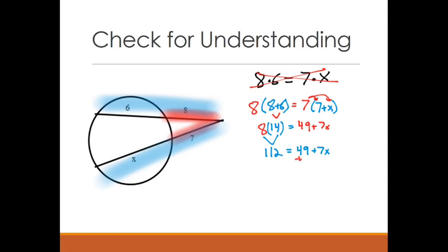And that's equal to 49 plus 7X. Then I'm going to subtract 49 from each side. And we have 63 equals 7X. And then lastly, I'm going to divide by 7 on each side of my equation. I'm going to get that X equals 9. That is our solution.